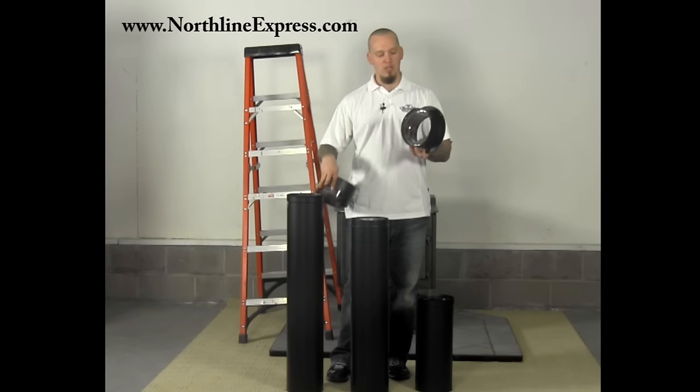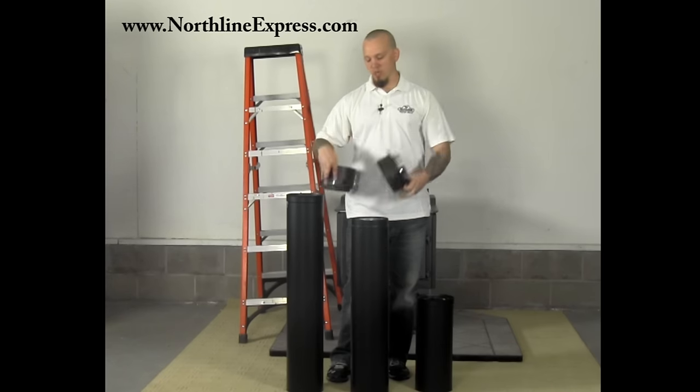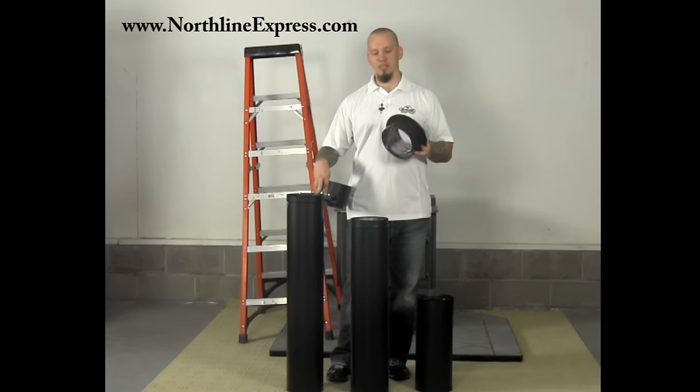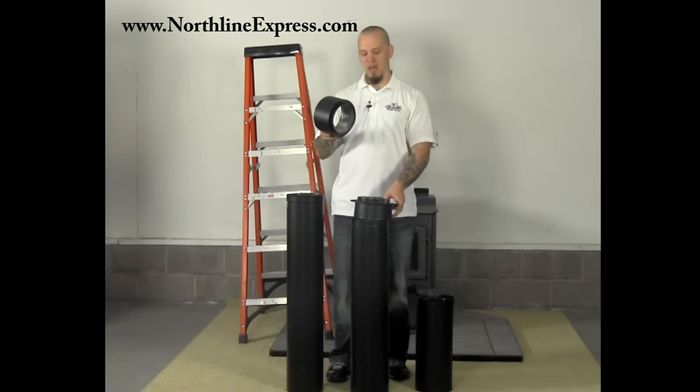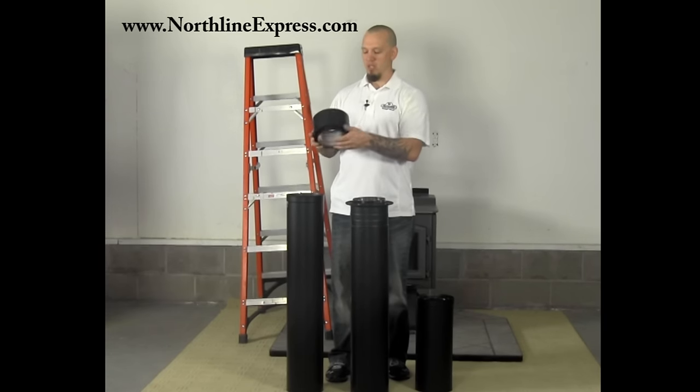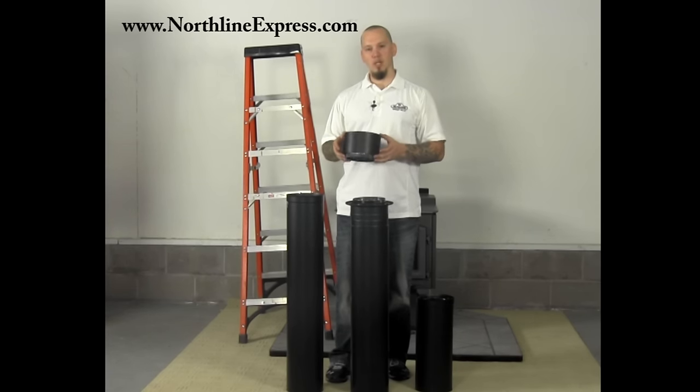We've also got our DVL chimney adapter. This is going to adapt our double wall stove pipe to our chimney pipe at our round ceiling support. We'll show you how to install that and then we've got a stove top adapter which you can see has this crimped end at the bottom and that's going to allow us to set this right into the collar on our wood stove. So let's go ahead and get started and show you how this goes together.